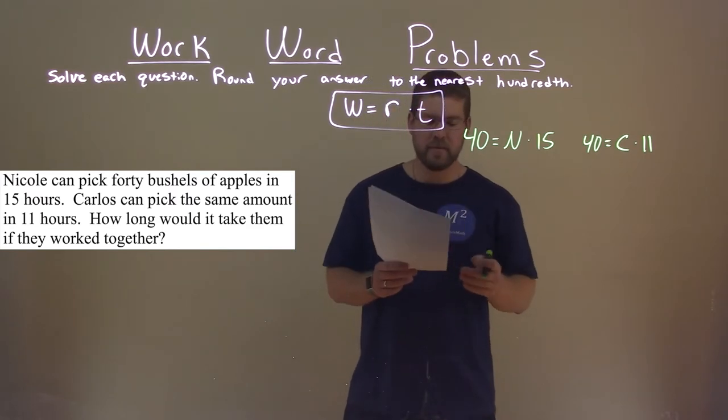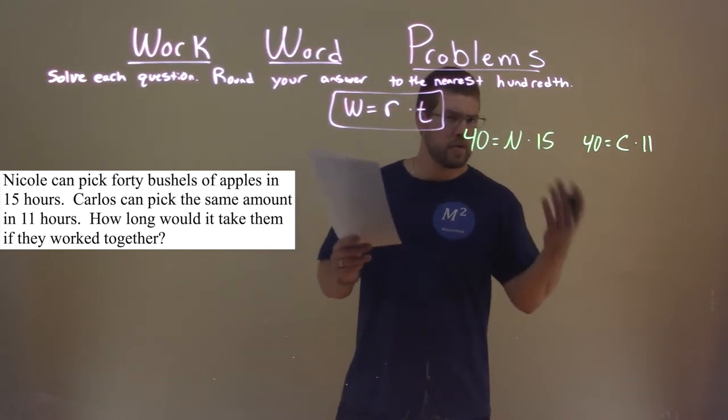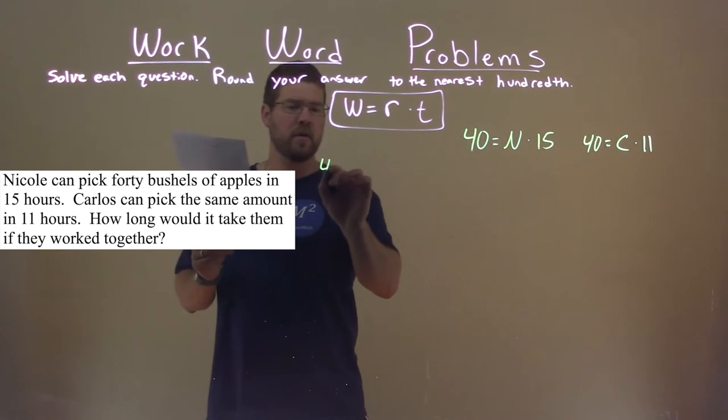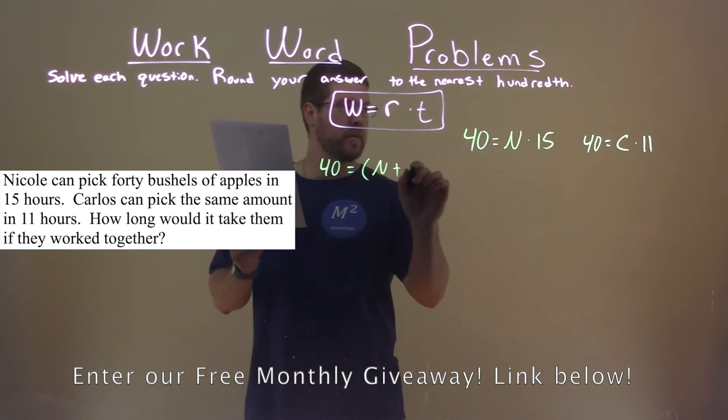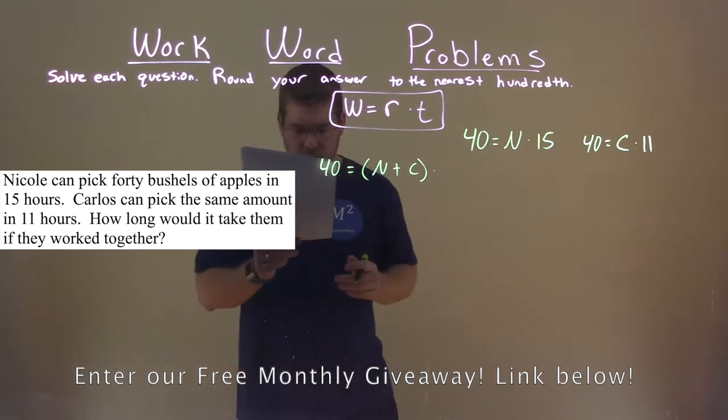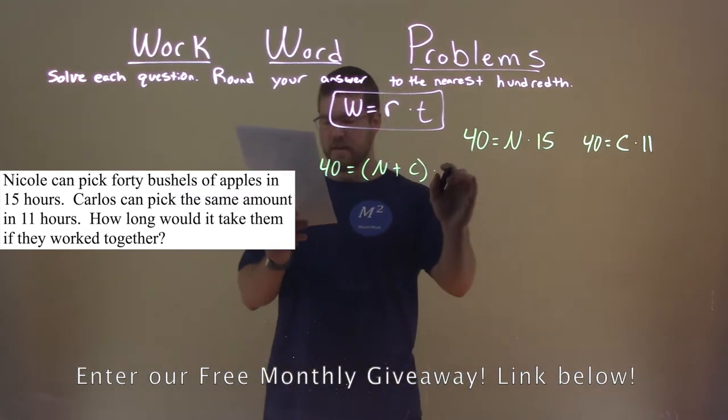And we want to find out what happens if they work together. So the job is still the same, the same work of 40 bushels of apples. If they work together, we add their rates, n plus c, and we need to find its time.